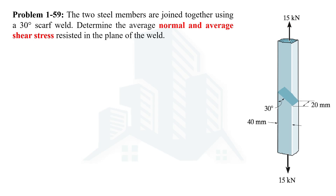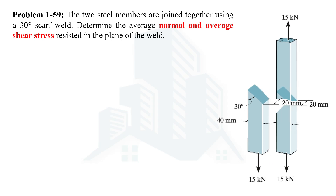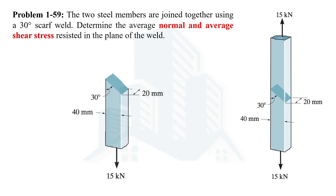In order to solve this problem we have to take one portion of one steel member — either the top member or the bottom member — and then determine the normal and average shear stress at the plane of weld. Let's take the bottom steel member. Since we are taking a section from a complete body that was in equilibrium, because a 15 kilonewton force was acting upward and 15 kilonewton force was acting downward, the body was in equilibrium.